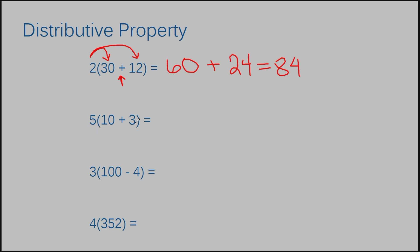Let's try this next example. 5 to the 10, then 5 to the 3. 5 times 10 is 50. Then I'm going to add — I know I'm adding because the sign here is addition. 5 times 3 is 15. Now I add these two and get 65.